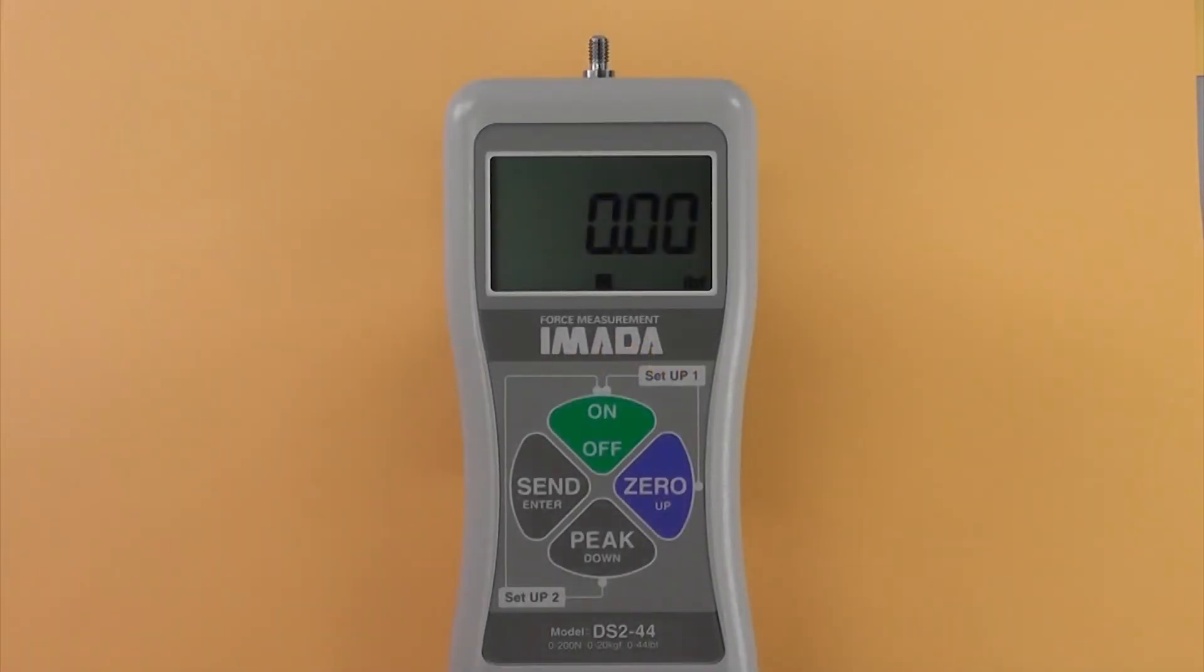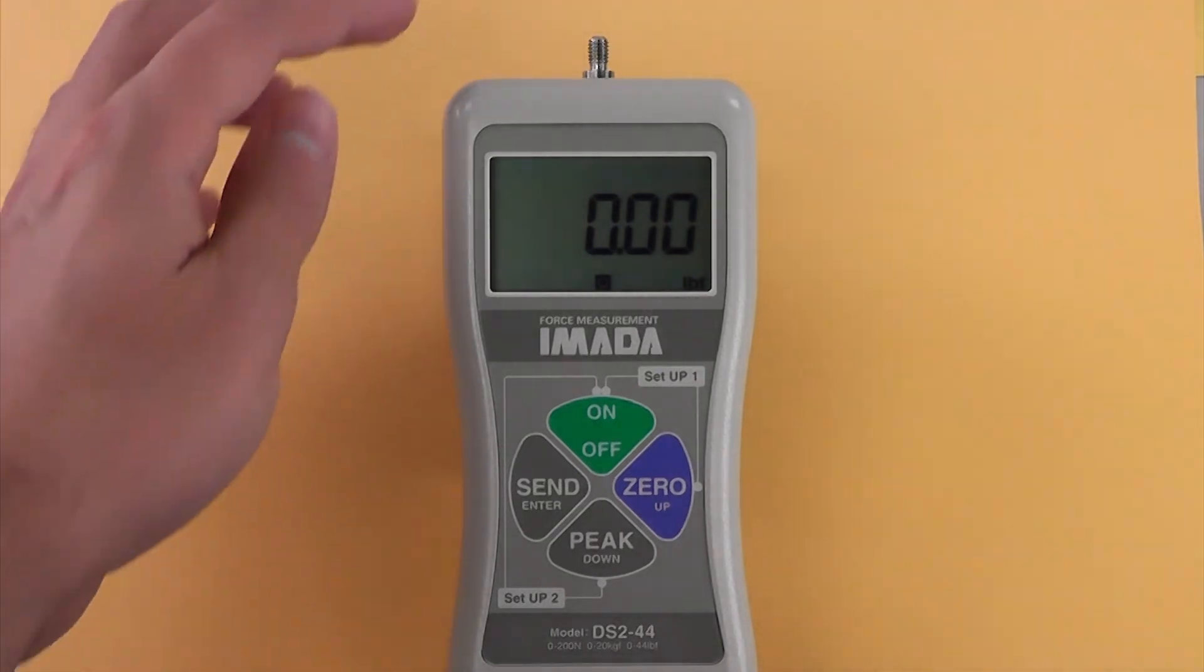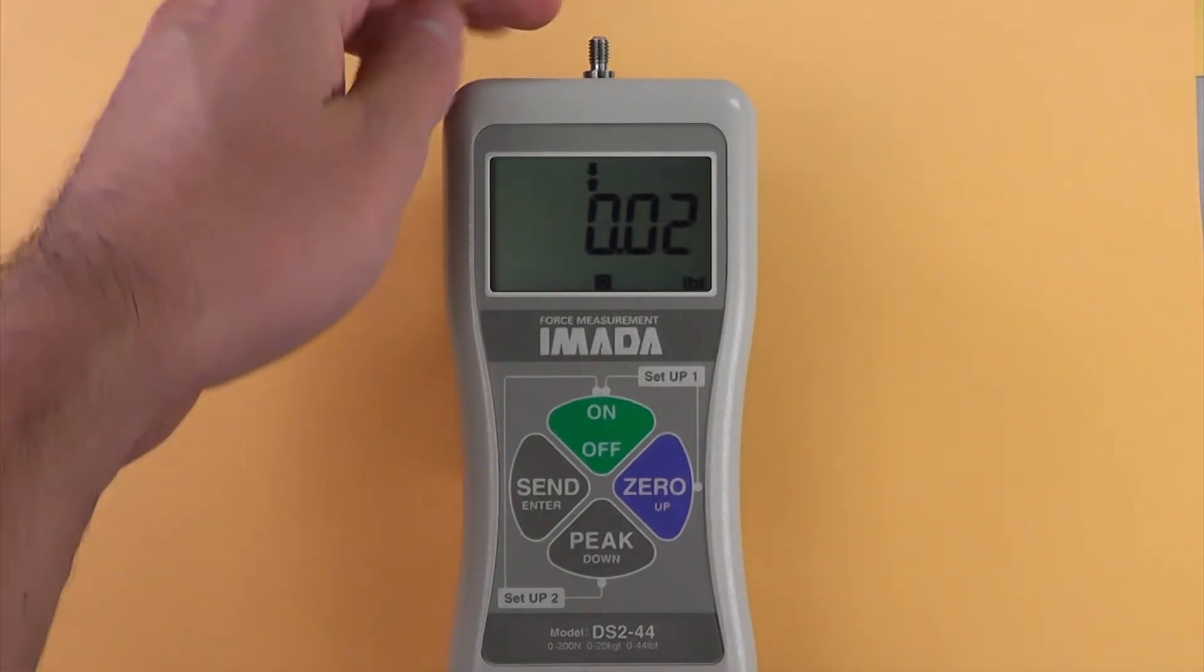Selecting peak or real-time measuring mode. Press ON to turn on the gauge and enter real-time mode.